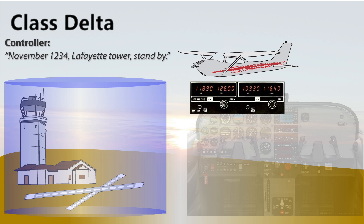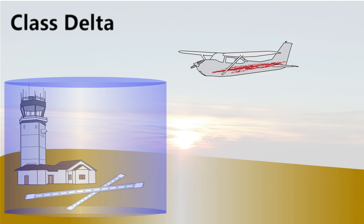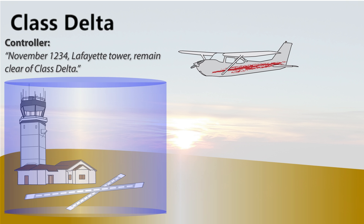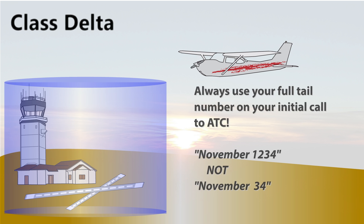Are you allowed to enter? At this point, although no specific instructions were given by the controller, two-way radio communication was established since the tail number was read back, and the pilot is permitted to enter the Class D airspace. However, even if two-way radio communication was established but ATC instructs you to remain clear of the airspace, then obviously the pilot should stay outside of the delta until told to do so. On a side note, this required read back of your tail number means that it is important on your initial call that you use your full tail number, and not an abbreviated version.